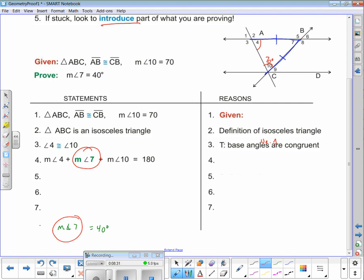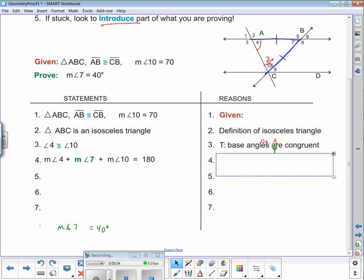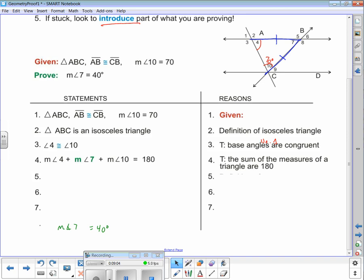How about the measure of angle 4 plus the measure of angle 7 plus the measure of angle 10 equals 180 degrees? Do you remember that? Here's the point: if stuck, look to introduce. There's measure of angle 7. I'm just trying to get a 7 in there. I'm using the fact that m∠4 + m∠7 + m∠10 = 180.